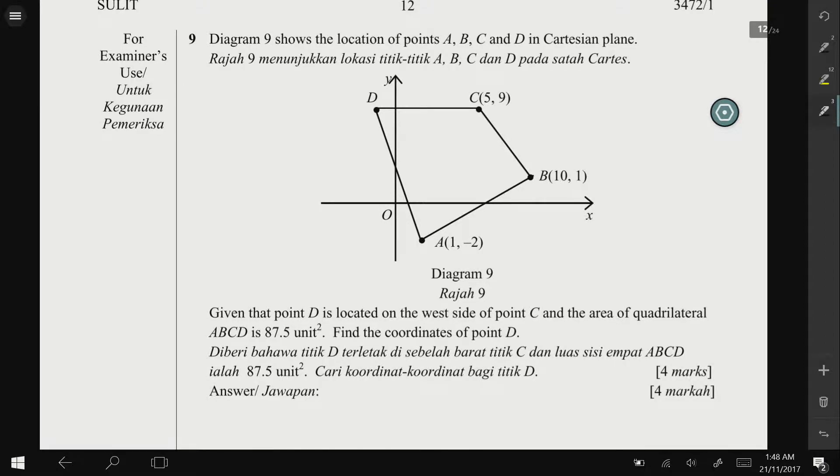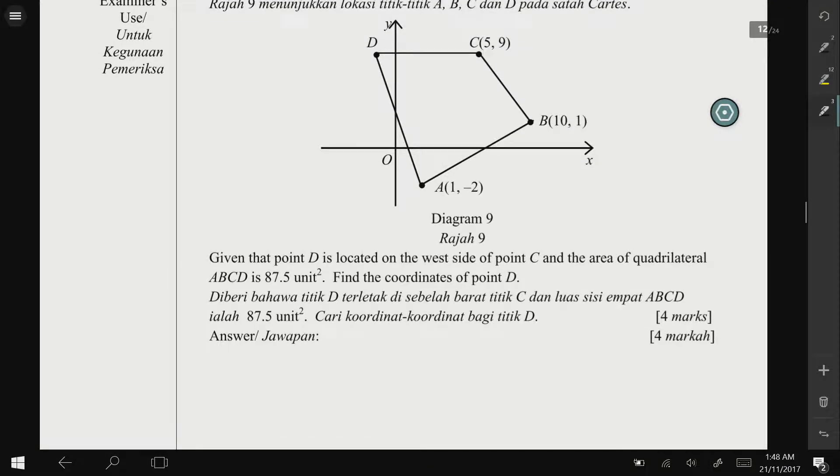Question number 9. Diagram 9 shows the location of points A, B, C, and D in a Cartesian plane. Given that point D is located on the west side of point C, meaning point D and C form a horizontal line. Since D and C are on a horizontal line, they share the same y-value. So we know that the y here is 9.